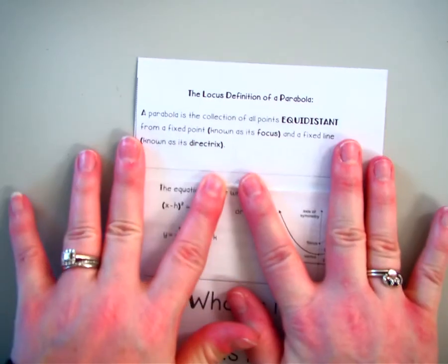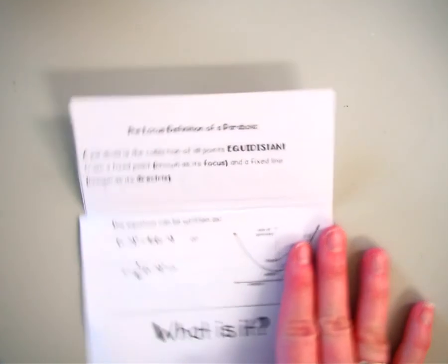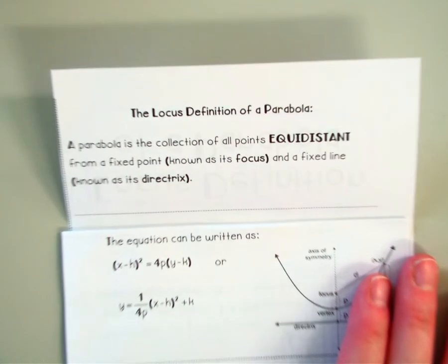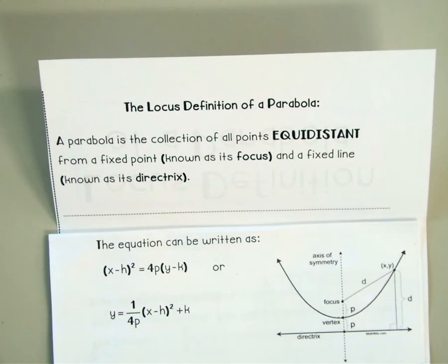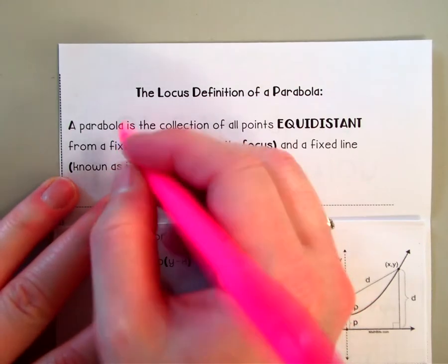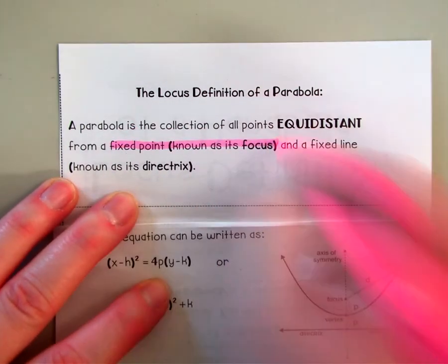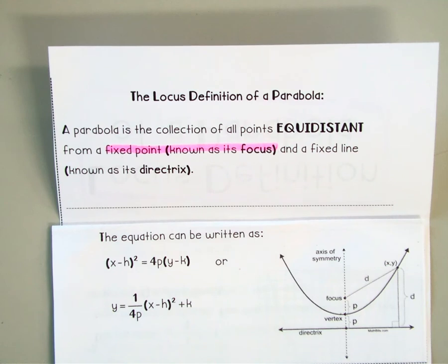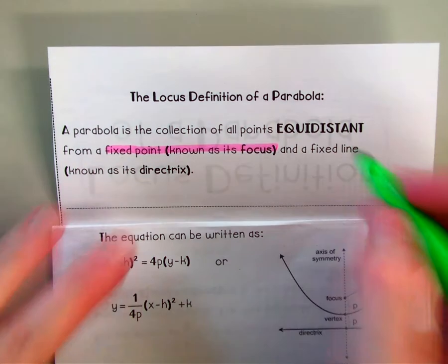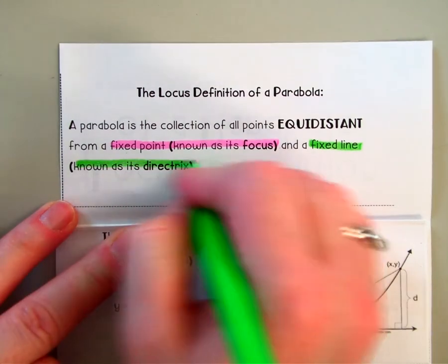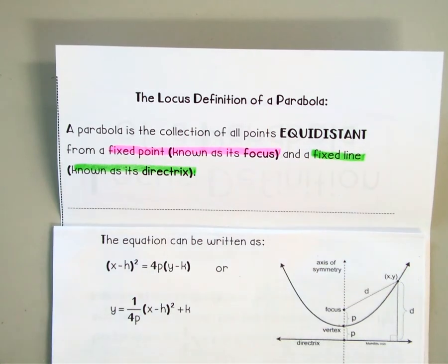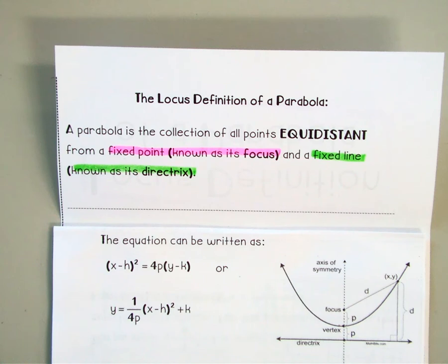The locus definition of a parabola is the collection of all points equidistant from a fixed point, which is known as the focus, and a fixed line, which is known as the directrix. You have a point and you have a line, and your parabola is created by finding all of the points that are the same distance between that point and that line. We call those the focus and the directrix.